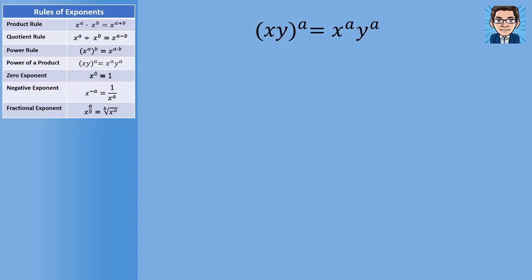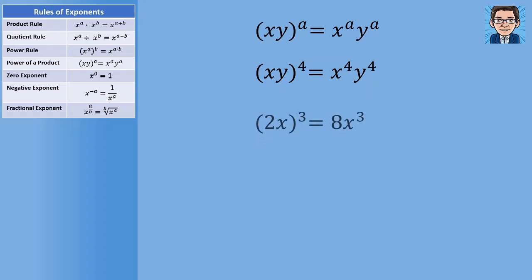In the next property, we have two things inside a parenthesis raised to a power. When we have two things inside a parenthesis, we've got to raise both to that power. So if we've got something like (xy) to the fourth, both the x and the y have to be taken to the fourth power. Where some people make mistakes is when you've got (2x) all to the third power — the 2 needs to be raised to the third power as well as the x. So this simplifies to 8x to the third.